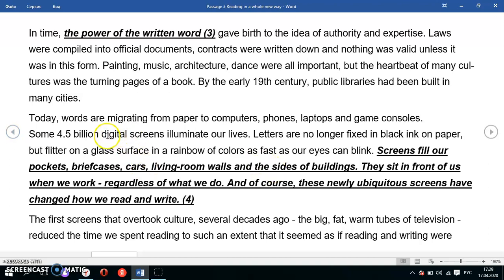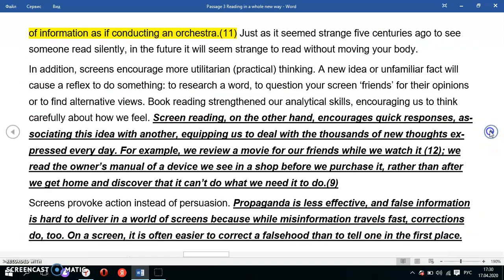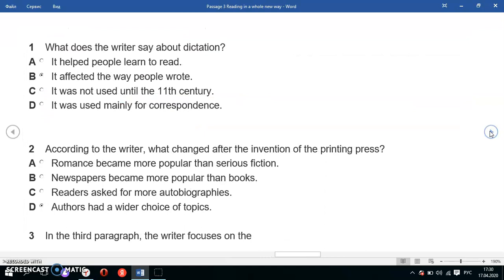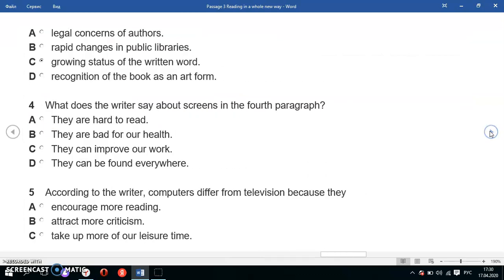Screens fill our pockets, briefcases, cars, living room walls, and sides of buildings - these are examples of where we can find screens, almost everywhere. They sit in front of us when we work, regardless of what we do. And of course, these newly ubiquitous screens have changed how we read and write. Ubiquitous means which can be found everywhere - screens now can be found in different areas of our life, almost everywhere, together with us.